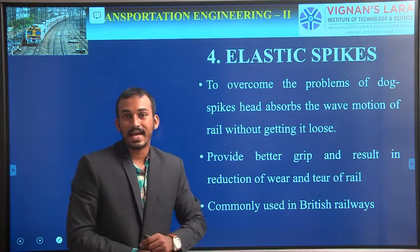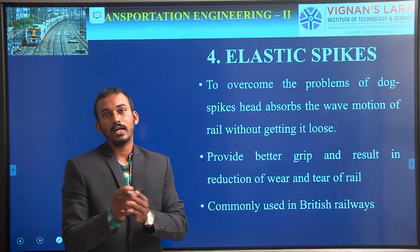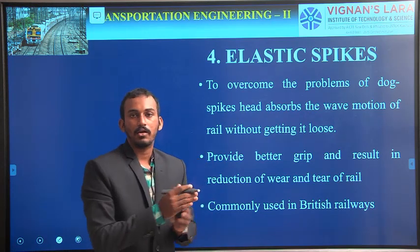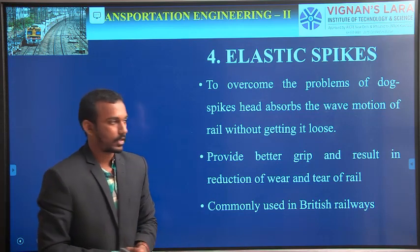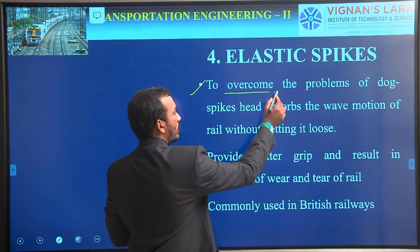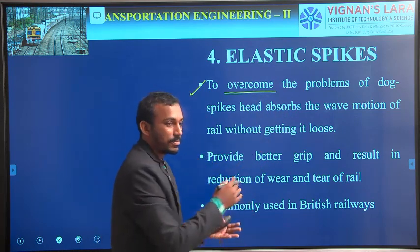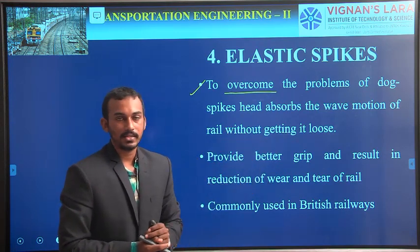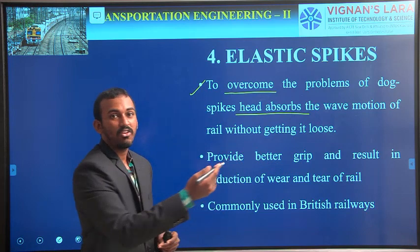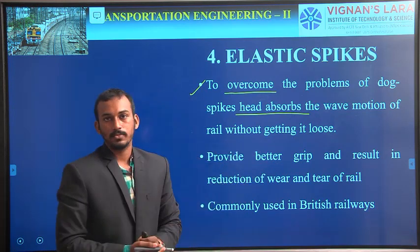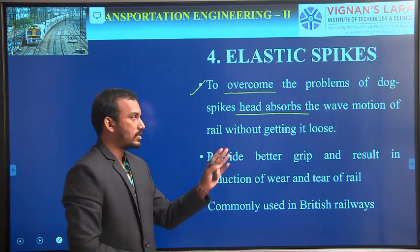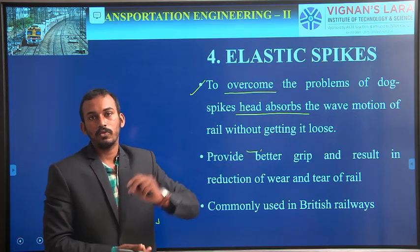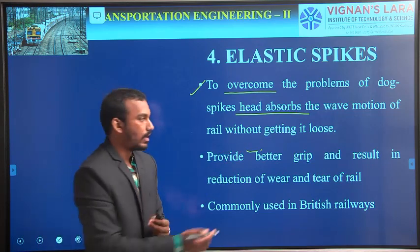The fourth type is elastic spike. This is the only spike that we are going to use for other than timber sleepers — the previous three types of spikes are used only for timber sleepers, whereas this elastic spike can also be used for steel sleepers or concrete sleepers. This also overcomes the problem of dog spikes. Dog spikes cannot absorb impact and vibrations, so they get loosened. But in case of elastic spikes, the head absorbs the wave motion — meaning vibrations of the rail — without getting loosened.